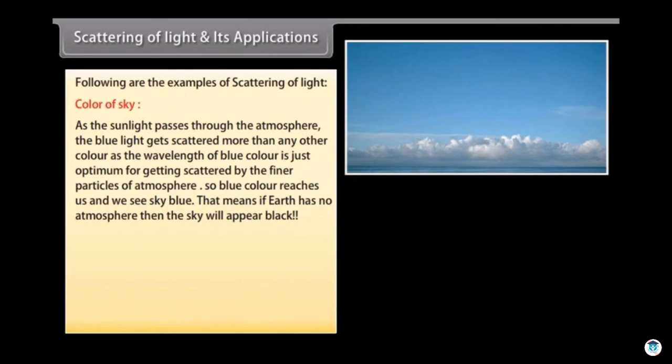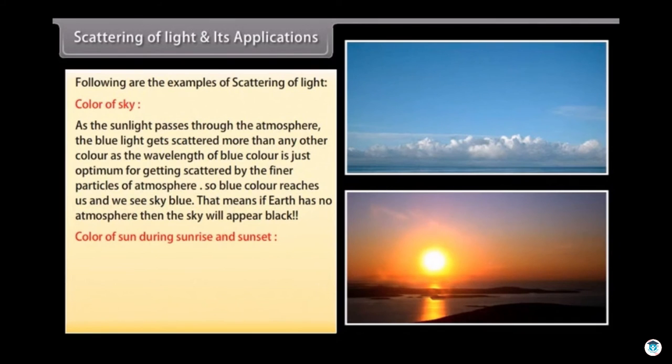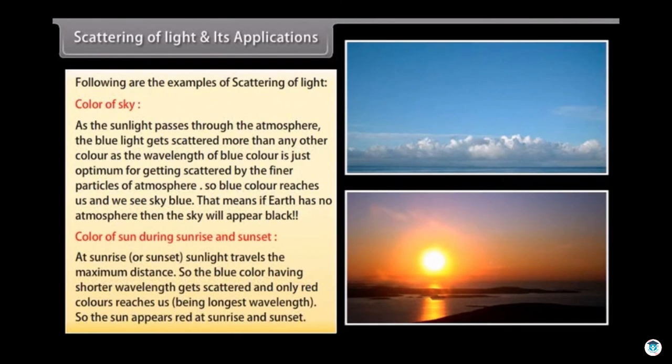Color of sun during sunrise and sunset: At sunrise or sunset, sunlight travels the maximum distance, so the blue color having shorter wavelength gets scattered and only red colors reach us being longest wavelength. So the sun appears red at sunrise and sunset.